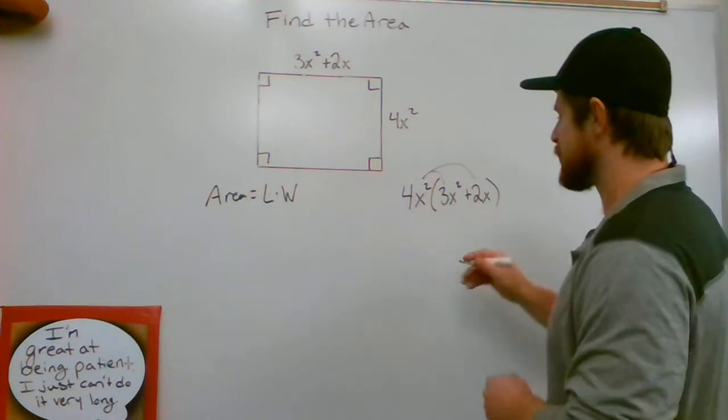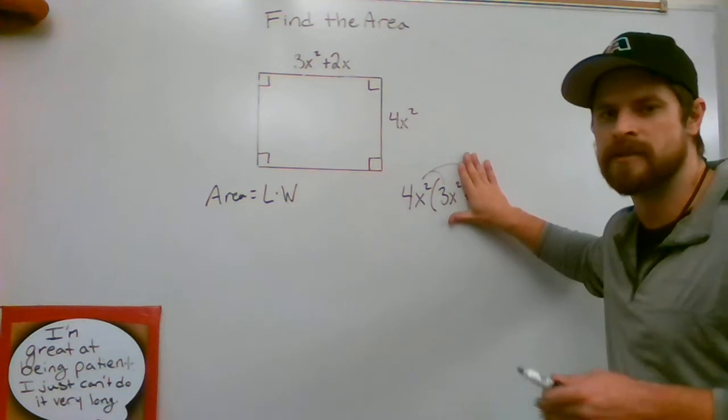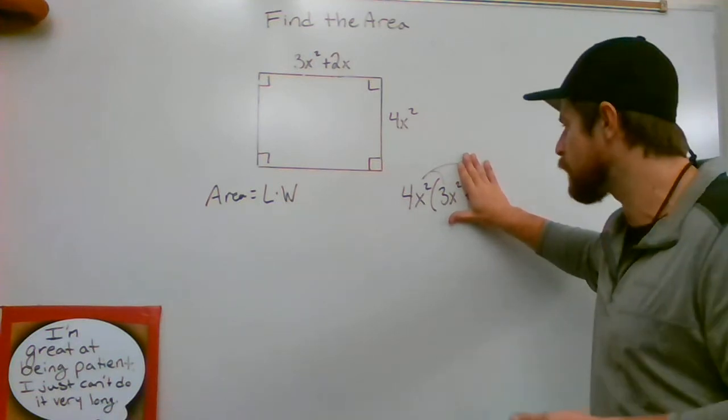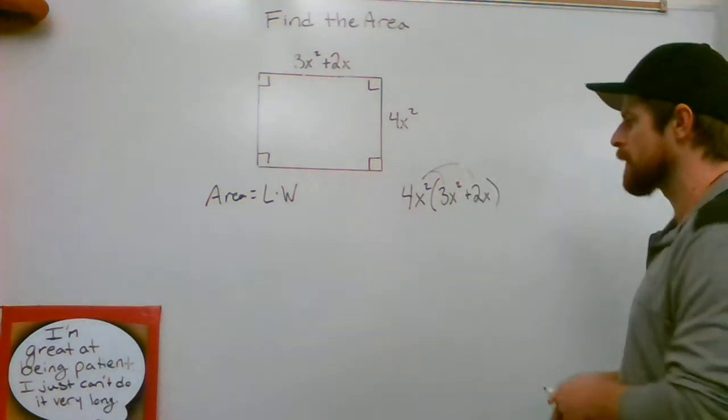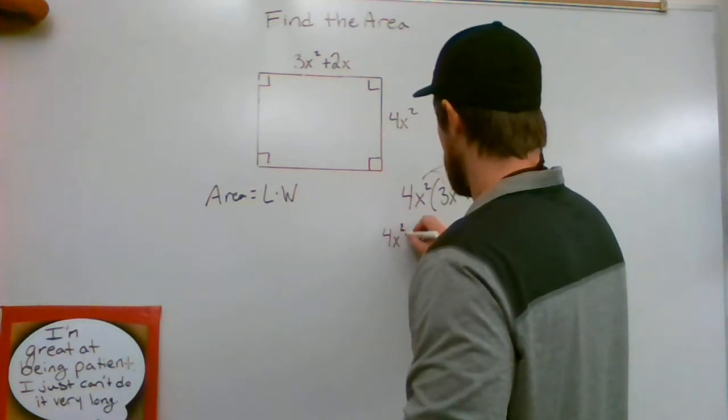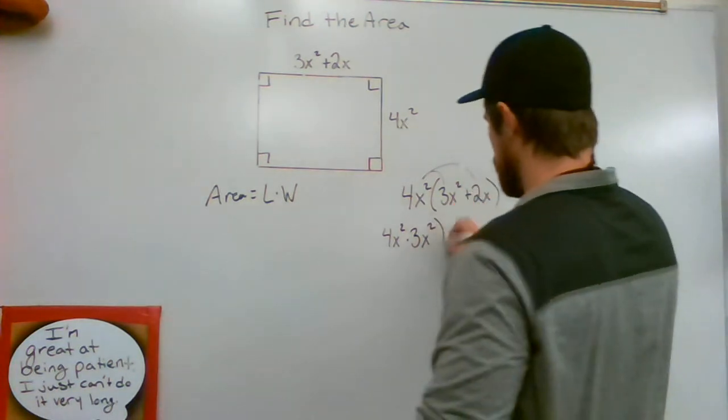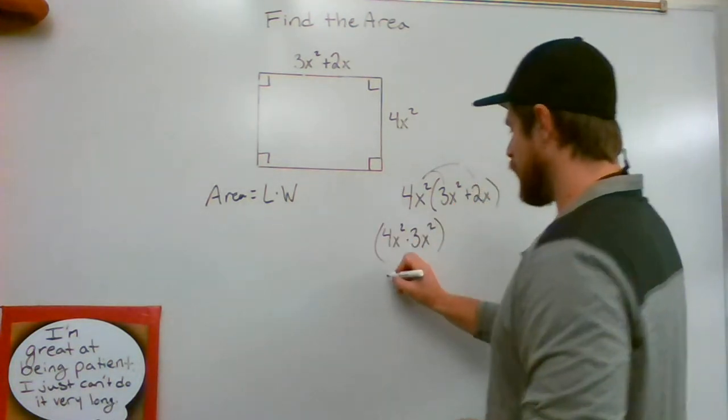First, 4x squared times 3x. I want us to only think about that, like completely ignore the fact that there's any more. We're just going to multiply 4x squared times 3x squared. So, 4x squared times 3x squared.